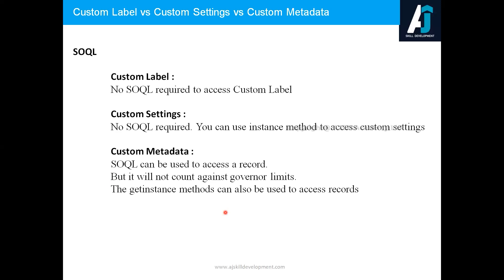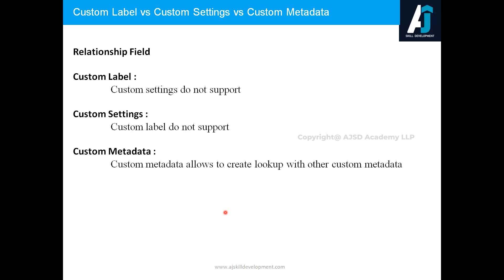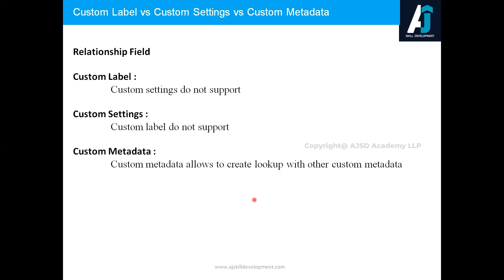The next aspect is relationship fields — is it possible to relate metadata, settings, and labels? Custom label, being a single value, does not support relationships. Custom settings also does not support relationship fields. Custom metadata does support relationships — you can create one custom metadata type and make it a child of another custom metadata type.